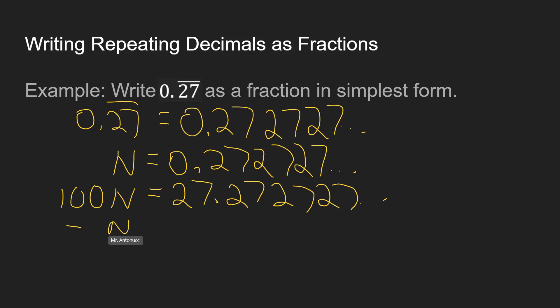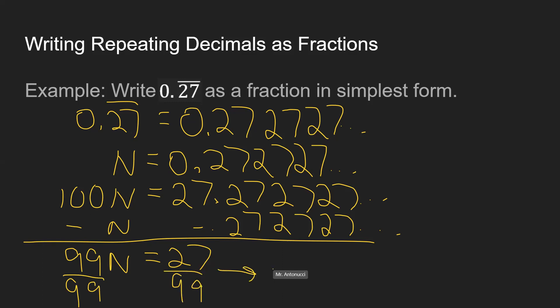Then again, you just subtract n, so minus the repeating part. Now, I picked ones in which the fraction that you get ends up not being in simplest form, but if it already is in simplest form, then you're done. You don't have to go any further. But 27/99 each has a factor of 9, so this would be 3/11.